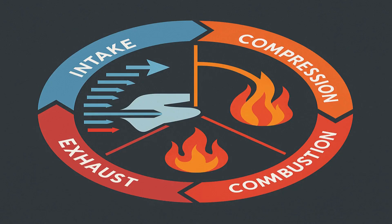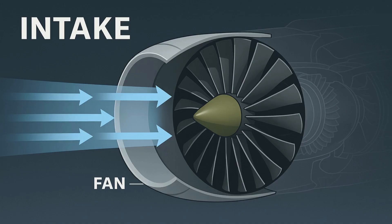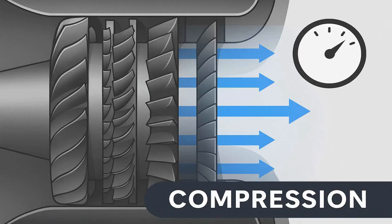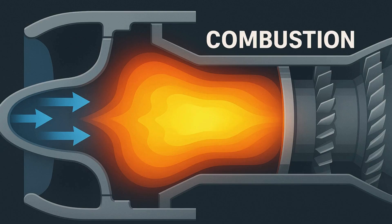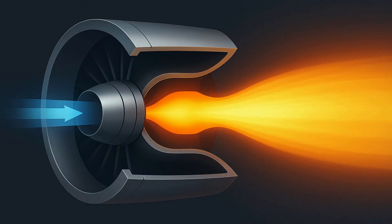At the heart of every modern jet engine lies the Brayton cycle, a continuous loop of four actions — intake, compression, combustion, and exhaust. Air rushes in at the front, gets squeezed by multiple compressor stages until its pressure climbs dozens of times over. Fuel sprays into this high-pressure air and ignites, producing temperatures above 2,000 degrees Fahrenheit. The resulting high-speed gases blast out the back through a nozzle, creating thrust. As they pass through turbines, they spin shafts that power the compressors and the front fan, so the process repeats without interruption thousands of times per minute.